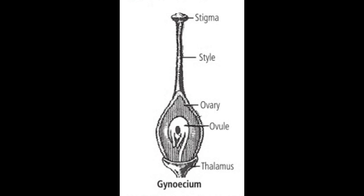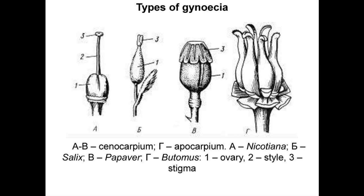As we remove the petals, right on the thalamus is seated a bulb-like structure called the ovary. Just above it, a fine tube-like structure called the style goes up and ends in a somewhat flat bead-like structure called the stigma. This whole structure of ovary, style, and stigma together forms the pistil or carpel — the female reproductive part of the flower. All the pistils present together are called the gynoecium, which is the female part of the flower.